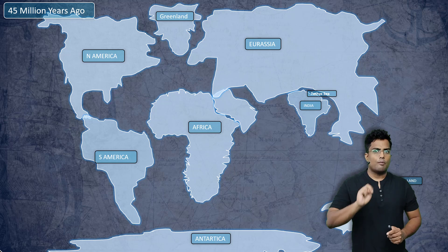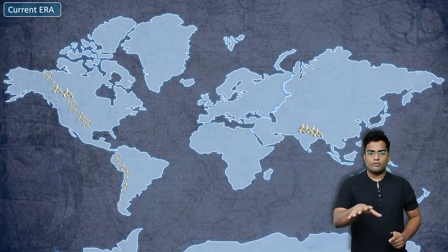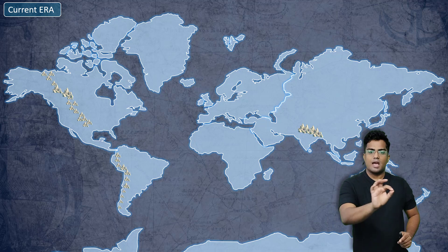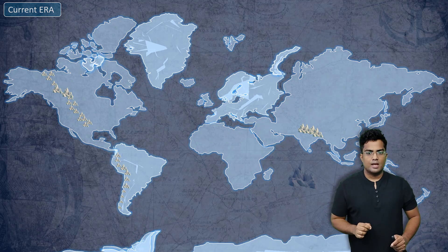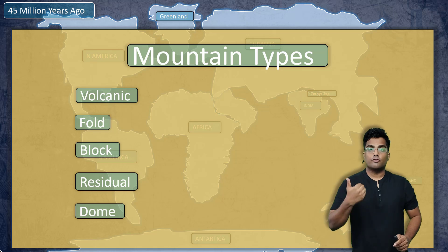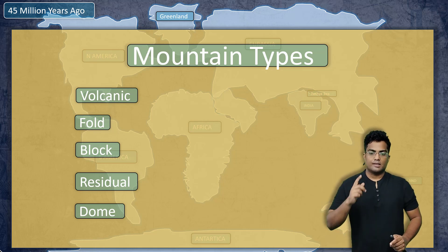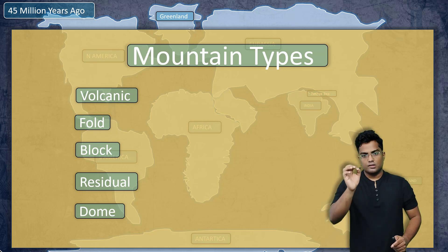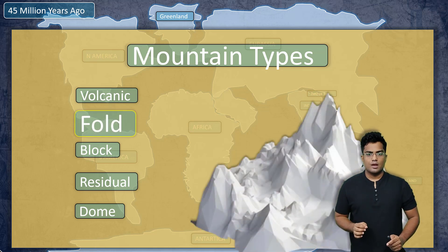Now we have to discuss two important facts. We have a lot of mountains here — some in North America, some in South America, and some in Asia. The mountains in Asia are quite familiar to you: the Himalayas. We are going to discuss a very important concept known as fold mountains. Essentially, there are five mountain types: volcanic, fold, block, residual, and dome. At this point, we are only interested in fold mountains.